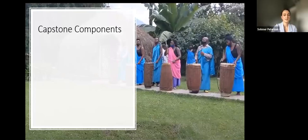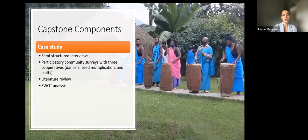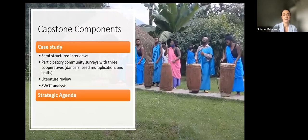Our case study comprised semi-structured interviews and participatory community surveys with three cooperatives: the dancers, seed multiplication, and crafts. We conducted a literature review on the effects of COVID-19 on ecotourism and how similar communities were overcoming challenges. A SWOT analysis was done based on interview transcripts, and all these mixed data methods were used to create an informed strategic agenda to improve organizational resilience, addressing COVID-19 impacts and exploring alternatives to ecotourism.